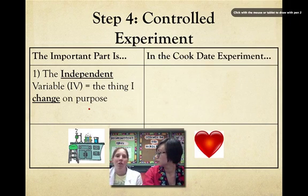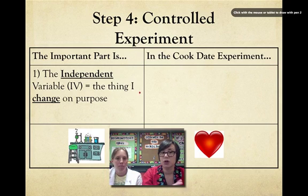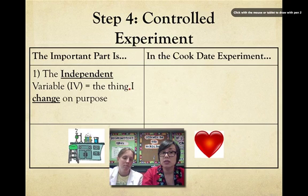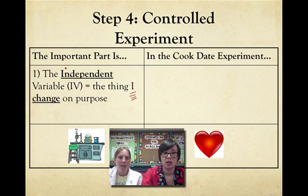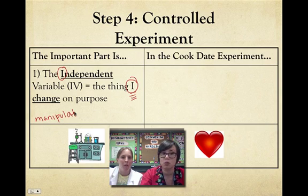There's a lot that goes into a controlled experiment — five important parts. The first is the independent variable, or IV. You're going to hear this term one million times this year — it needs to become your best friend. The IV is something the SOL will always ask you to identify. The easiest thing to remember: the IV is the thing that I change. 'I' as in independent, 'I' the scientist change it. It can also be called the thing that's being manipulated — manipulate means the same thing as change.